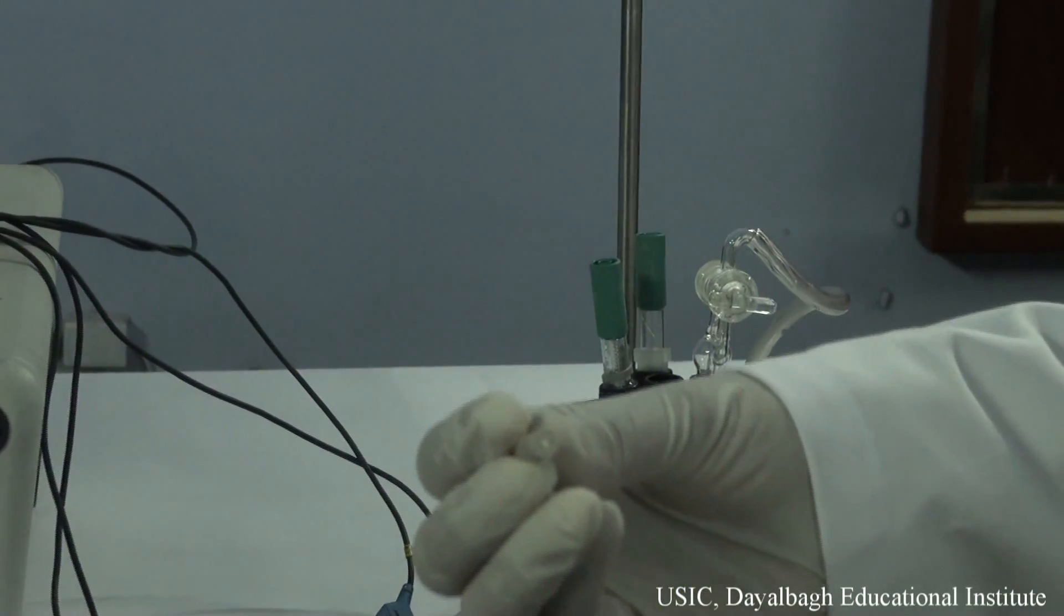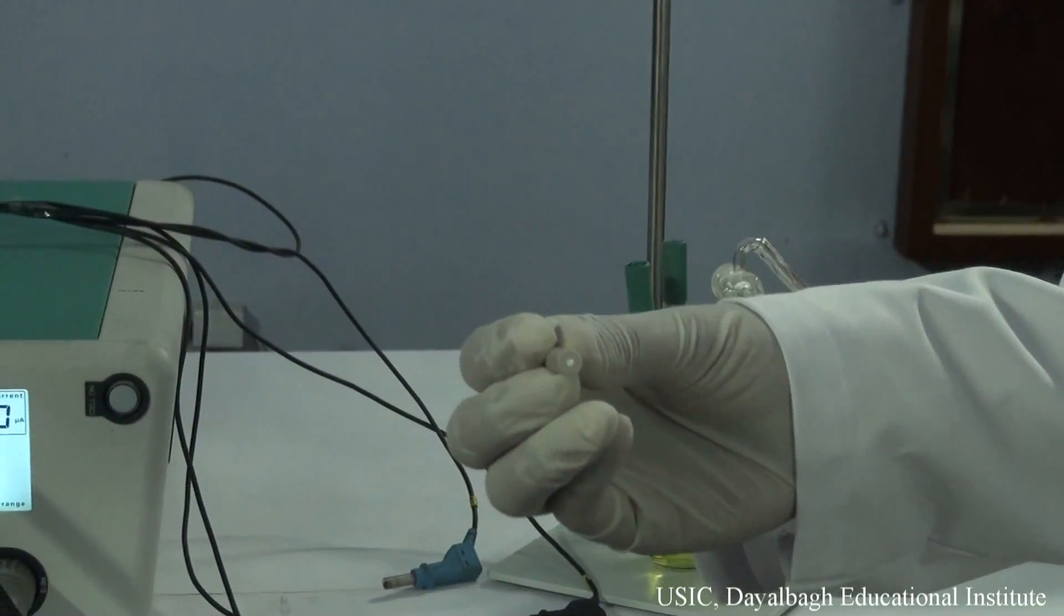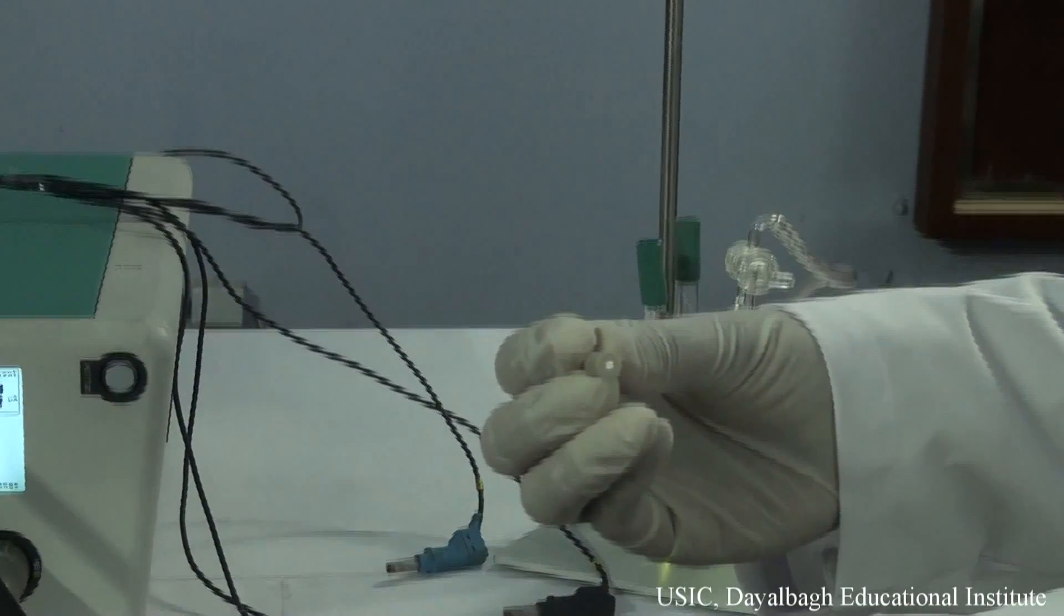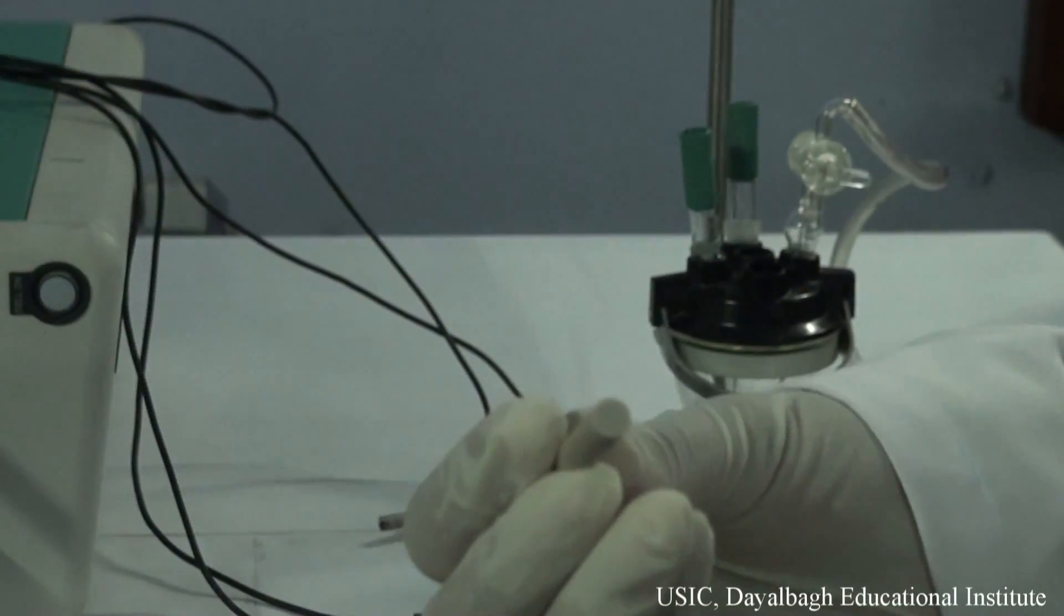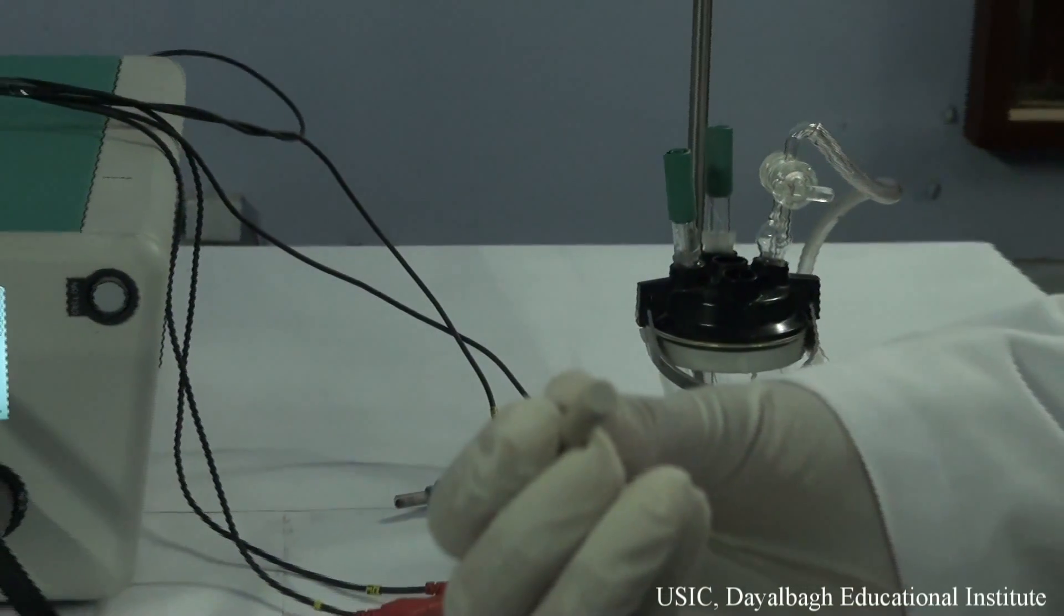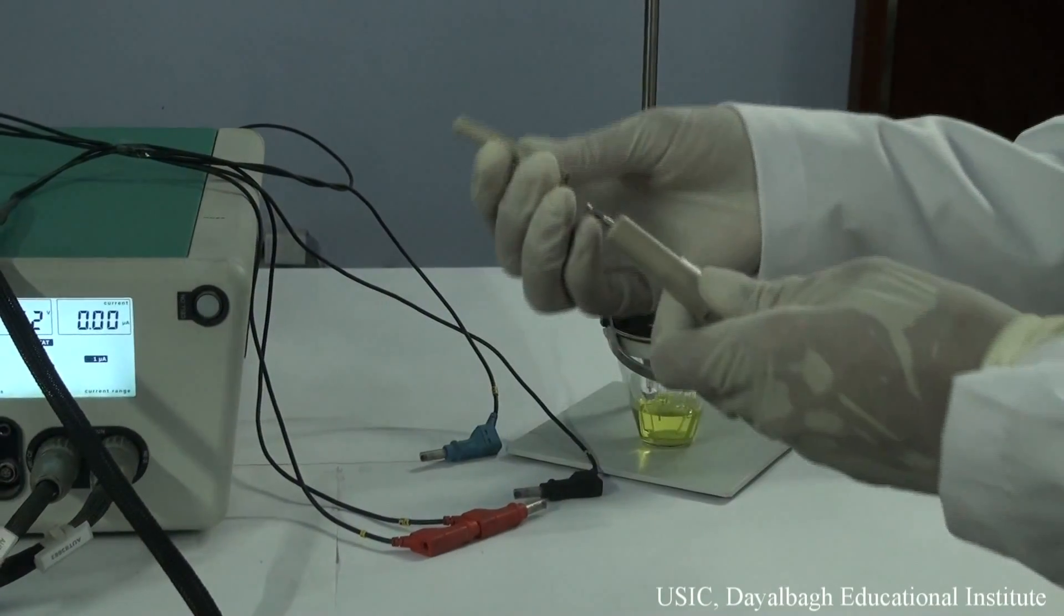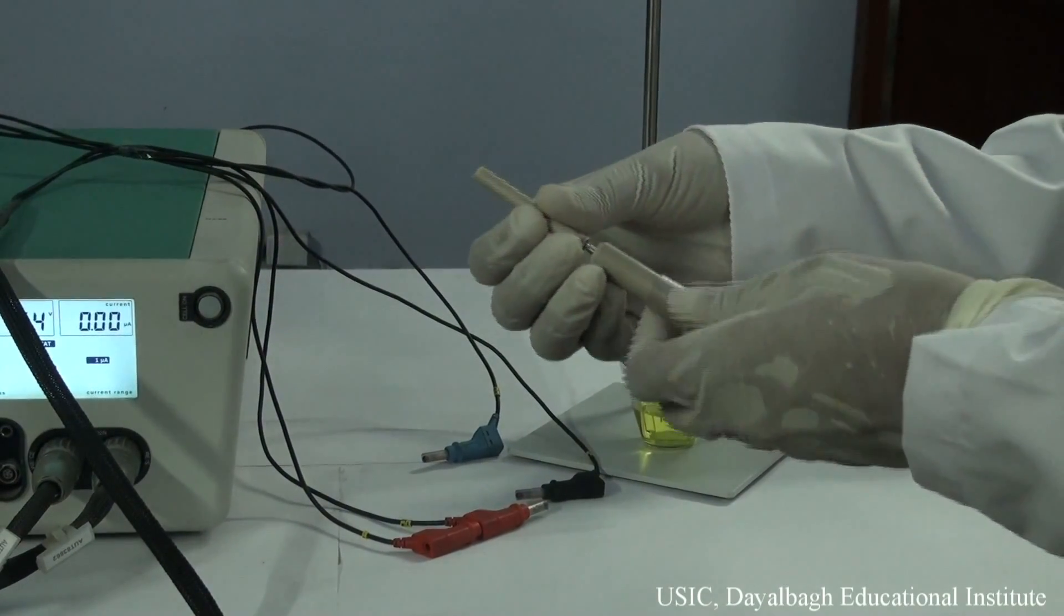And the electrode which we are using is the platinum solid electrode for the study of ferrisenite solution. We can see the surface of the platinum electrode. We keep this in a holder.